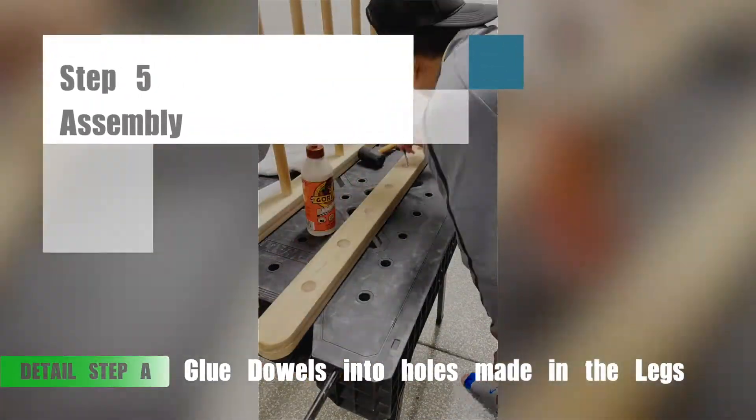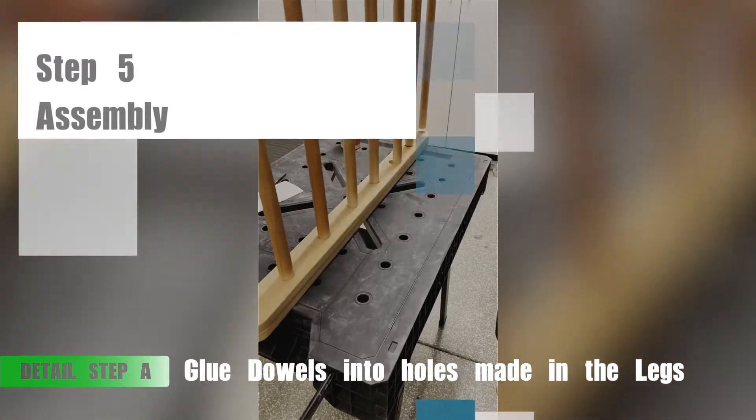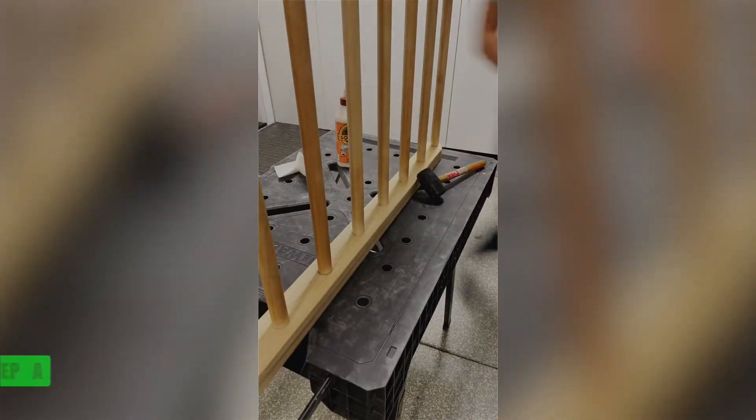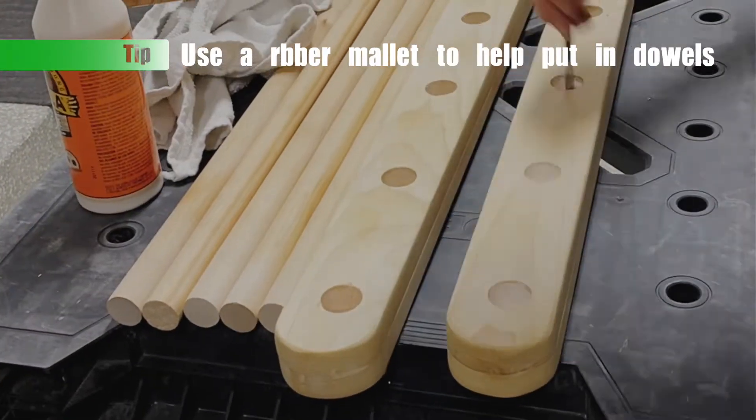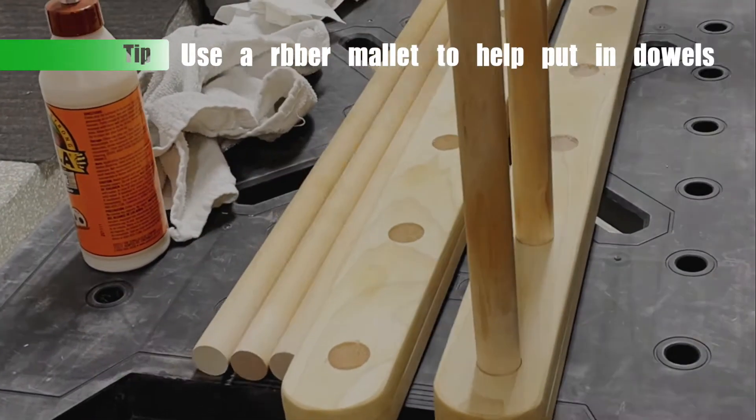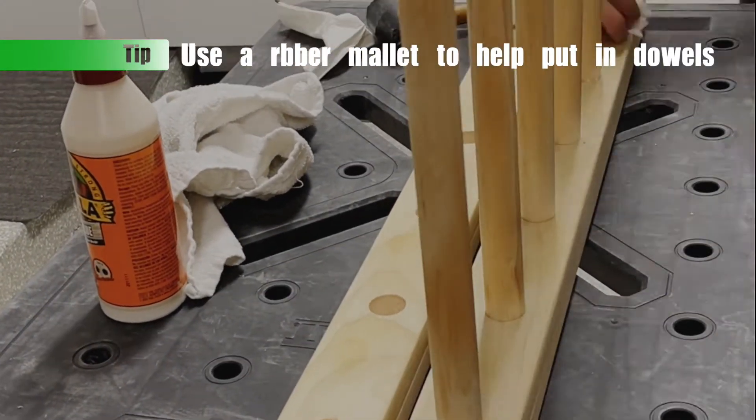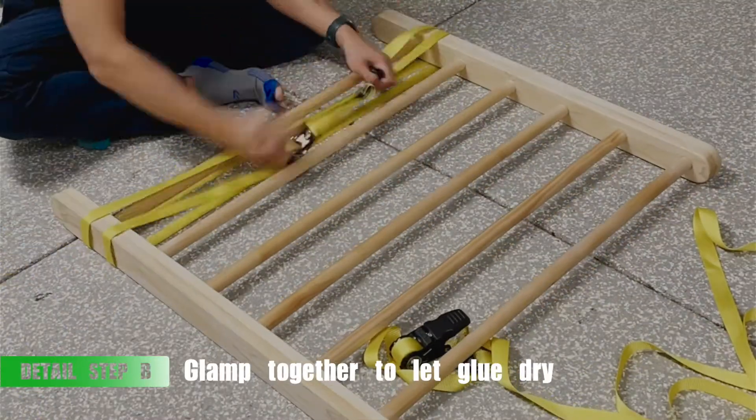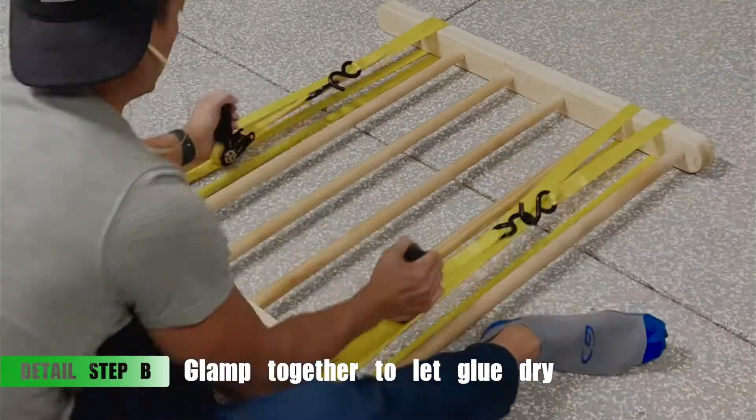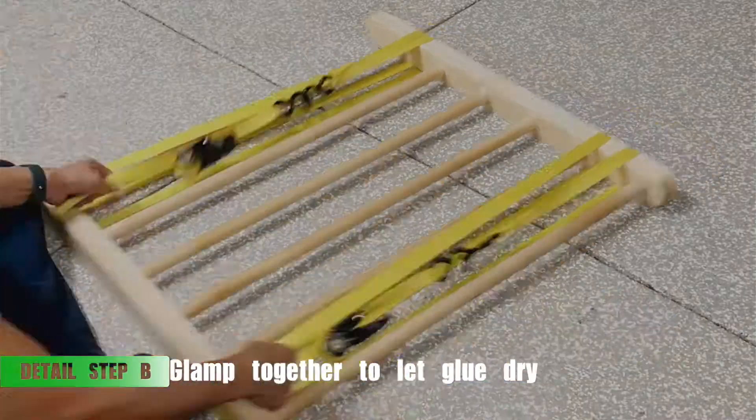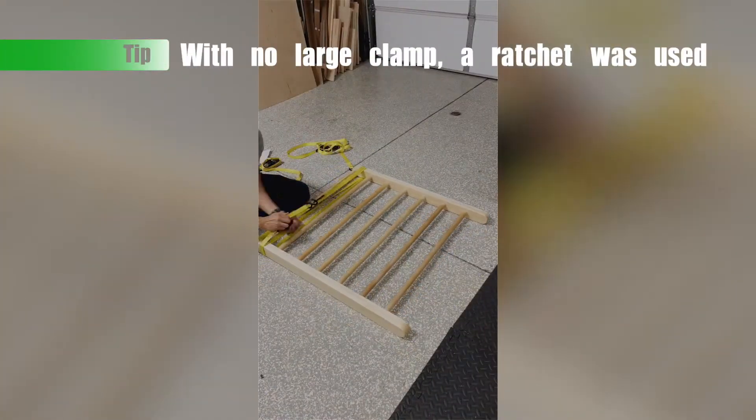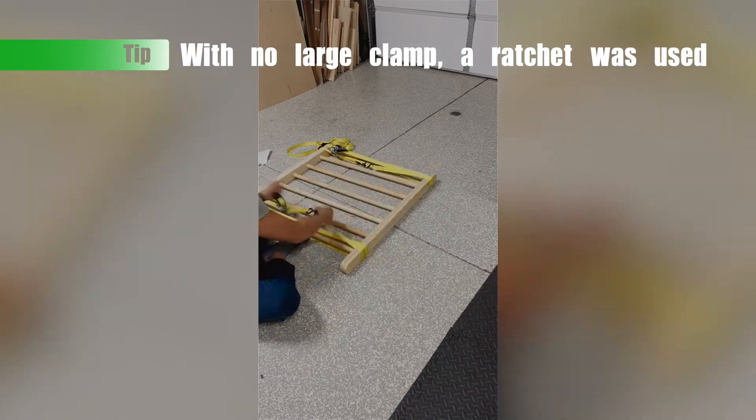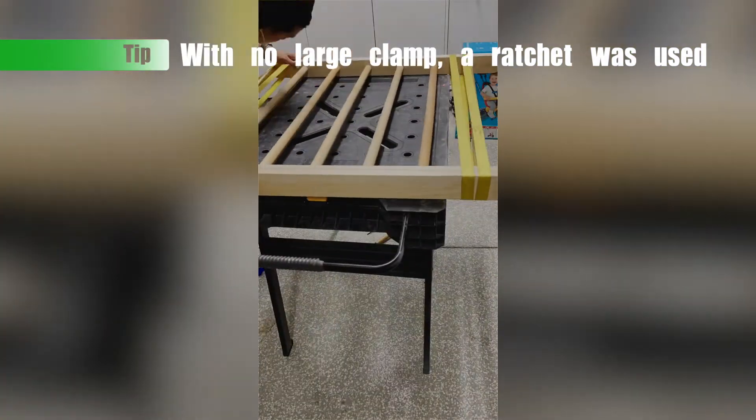Step 5. Gluing the dowels into the rails is the first detailed step. You're going to want to do this for both the short and long rails, where you put glue inside the holes that you made and then actually put the dowels in. After inserting the dowels into the rails, you're going to want to clamp the ends together to get a good tight and solid seal. I didn't have long clamps, so I basically used a ratchet and then kind of held them together overnight.